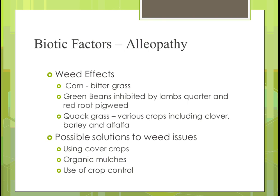In other words, if quack grass was growing around those crops, they would not grow well. Some of the solutions for this, if you have those types of weeds in your crops, you could use cover crops — that gives less chance for weeds to germinate. You can use organic mulches as an addition to your soil, and you can use crop control by the type of crop you put in, possibly intercropping where you plant two crops at the same time.